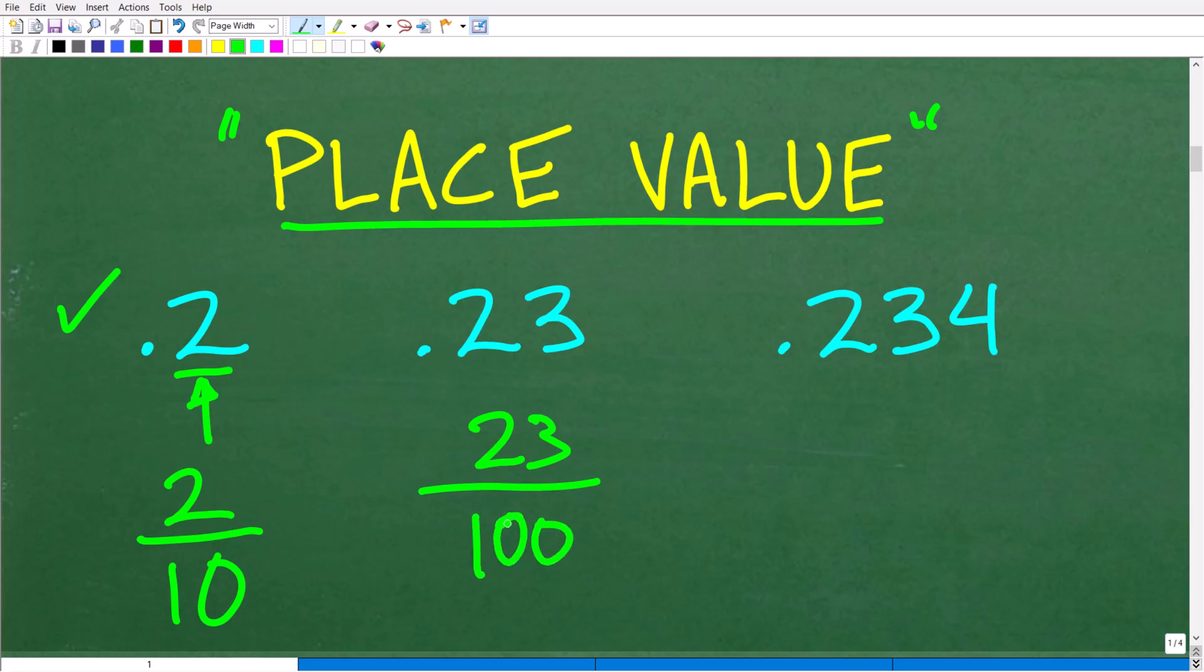Now if you doubt me, just get your calculator and take 23 divided by 100, and you'll see it turns out to be this decimal right here. All right, so hopefully you kind of understand what's going on here. Let's go ahead and do this last little example, point two three four. So if this is the tenths, this is the hundredths, what do you think this is going to be? If he said the thousandths place, you are an expert already in place value.